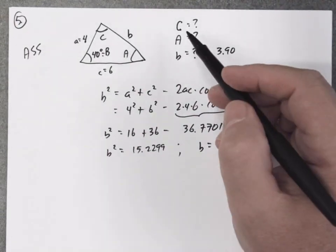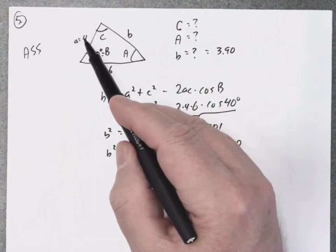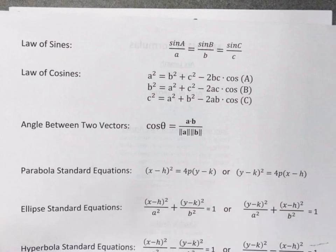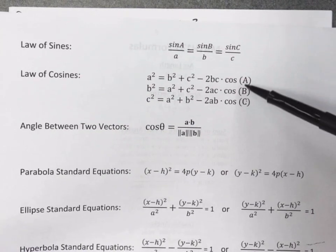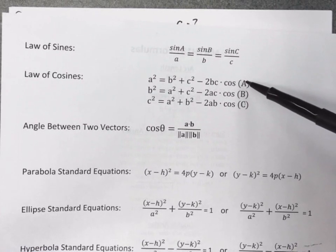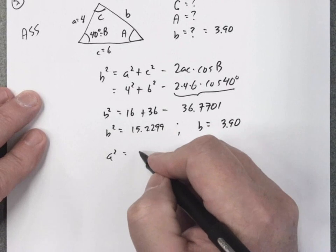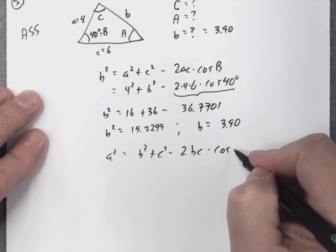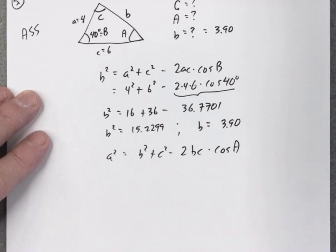Next we need to find either angle A or angle C. We now know all three sides: a is four, c is six, b is three point nine. Looking at the law of cosines, we can choose to find either cosine A or cosine C. Let's find angle A first, using the form: a squared equals b squared plus c squared minus two bc times the cosine of A.